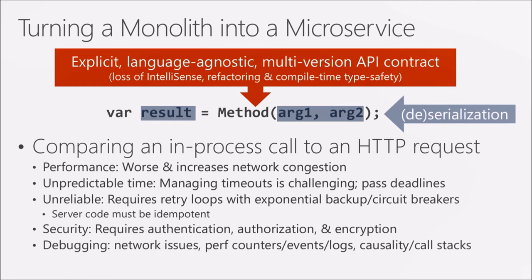Since a microservice sits on a network, it's callable by anything. An in-process call is only callable by code that linked the DLL, but a service on the network could be called by anything with access. So now you need to introduce authentication, authorization, and possibly encryption for data going across the wire — things you didn't have to think about when everything was in-process. Debugging also becomes more complicated: how do you look at performance counters, events, and logging when processing is happening across multiple services, and how do you aggregate those logs? You might need causality IDs or call stacks spanning all services.